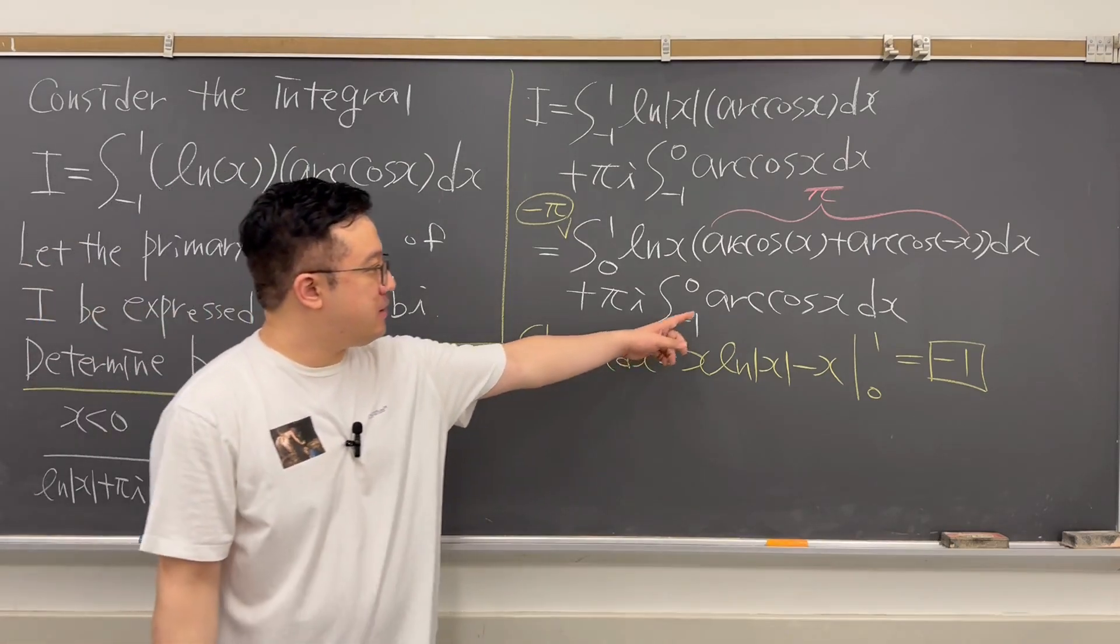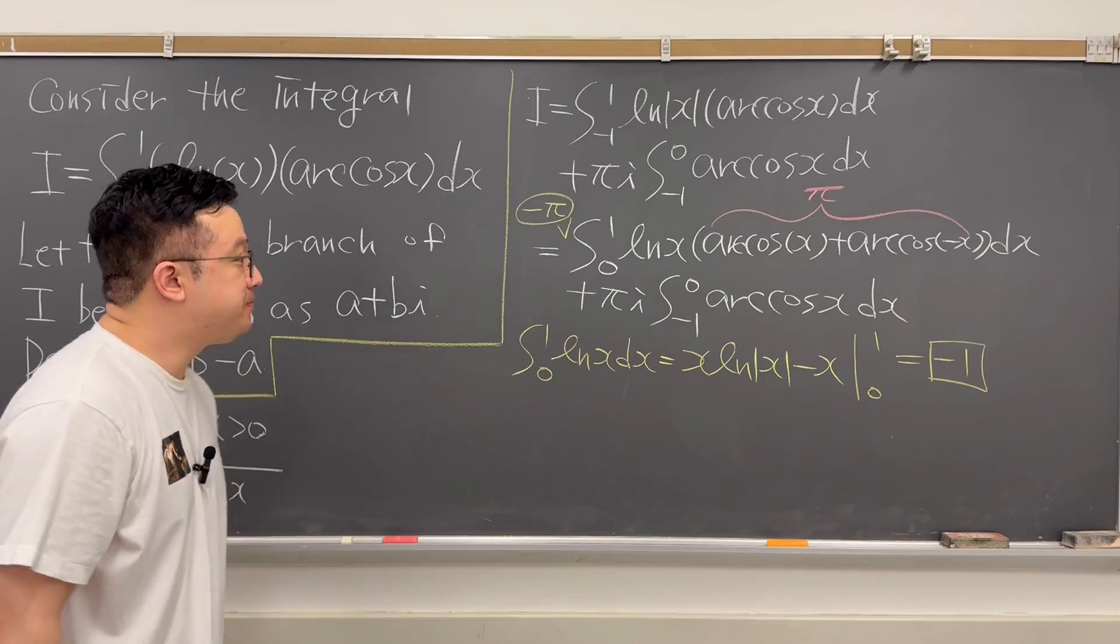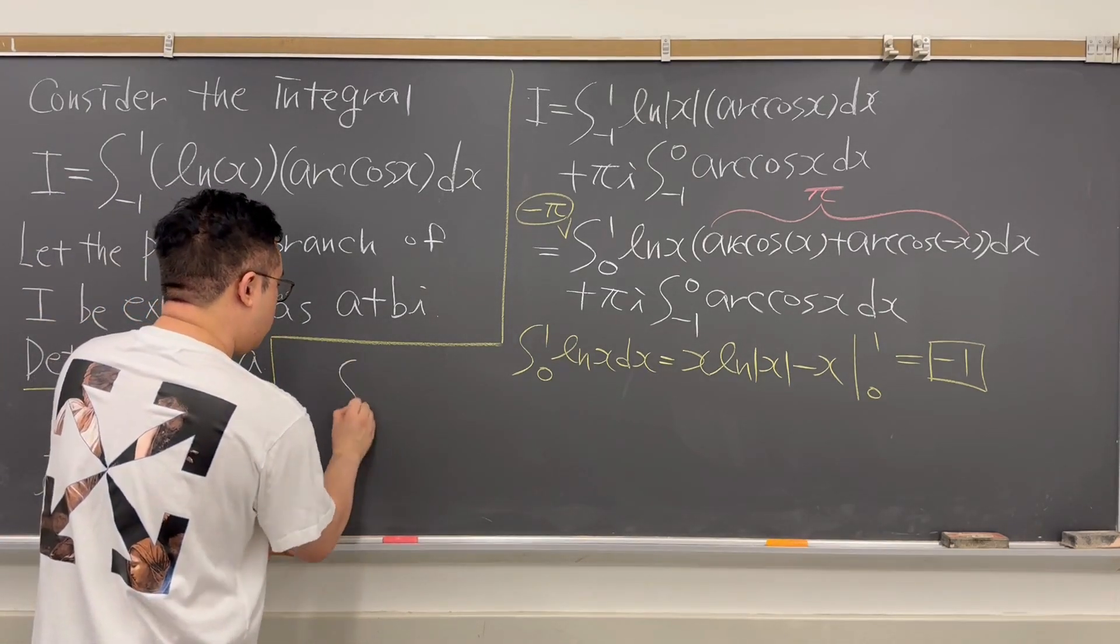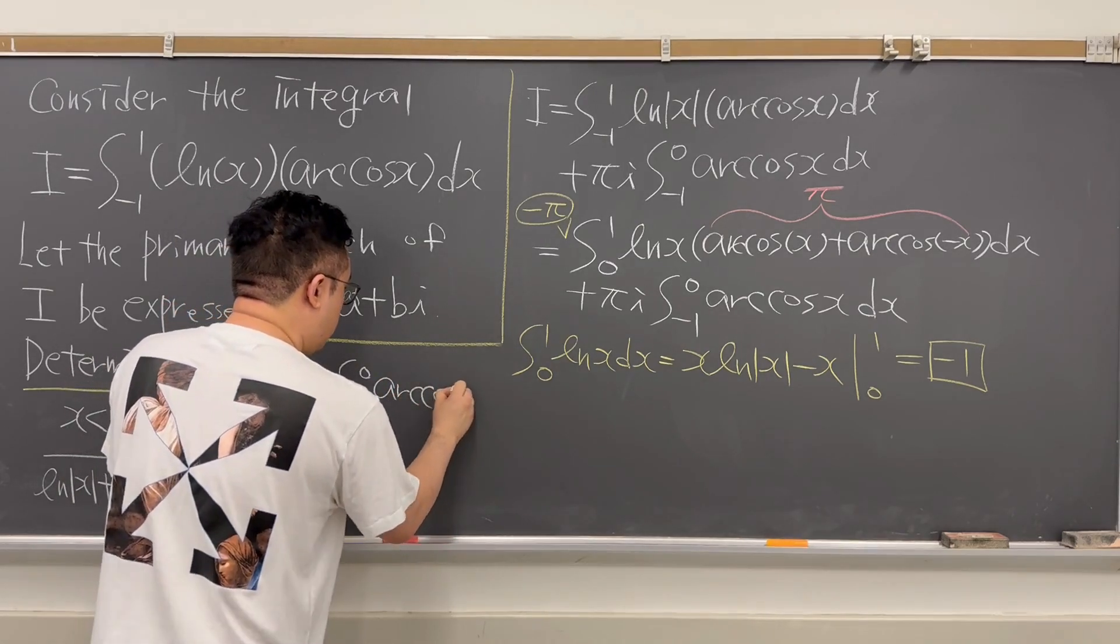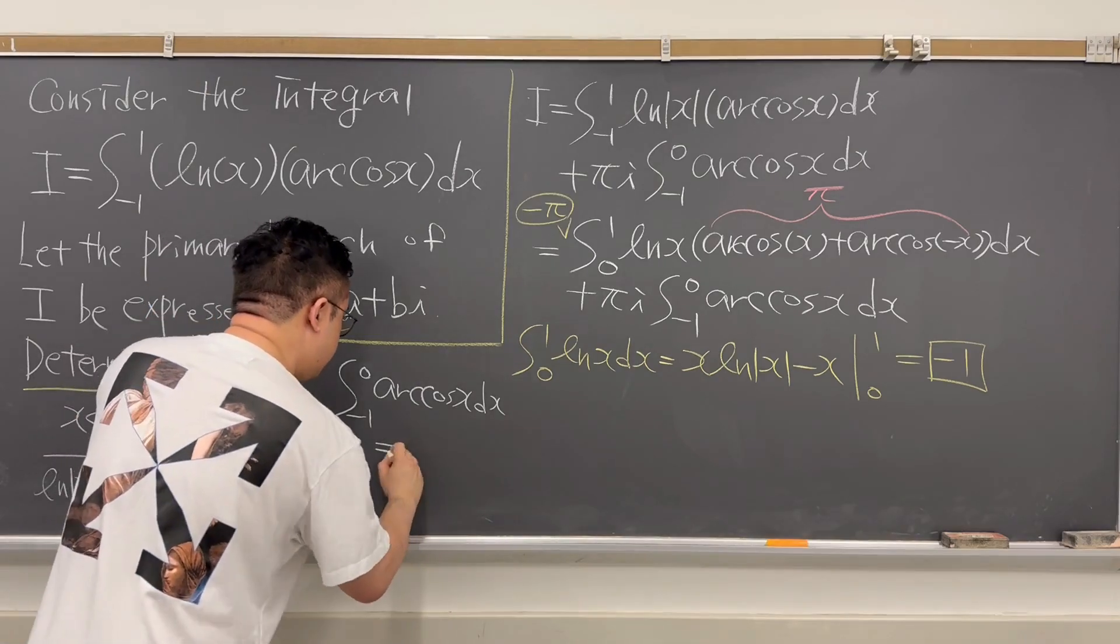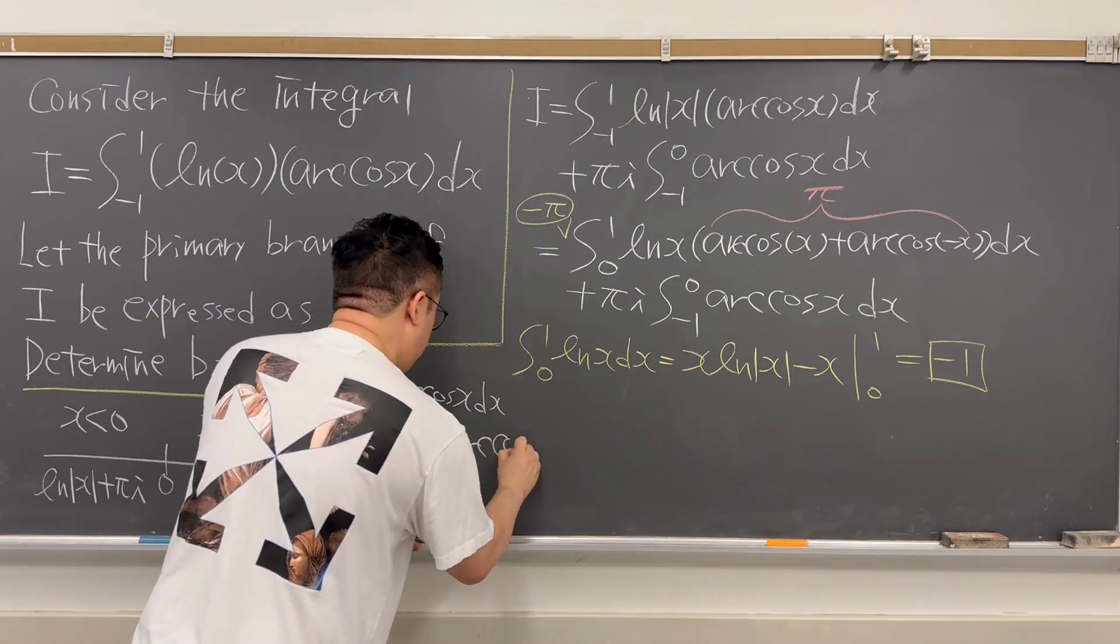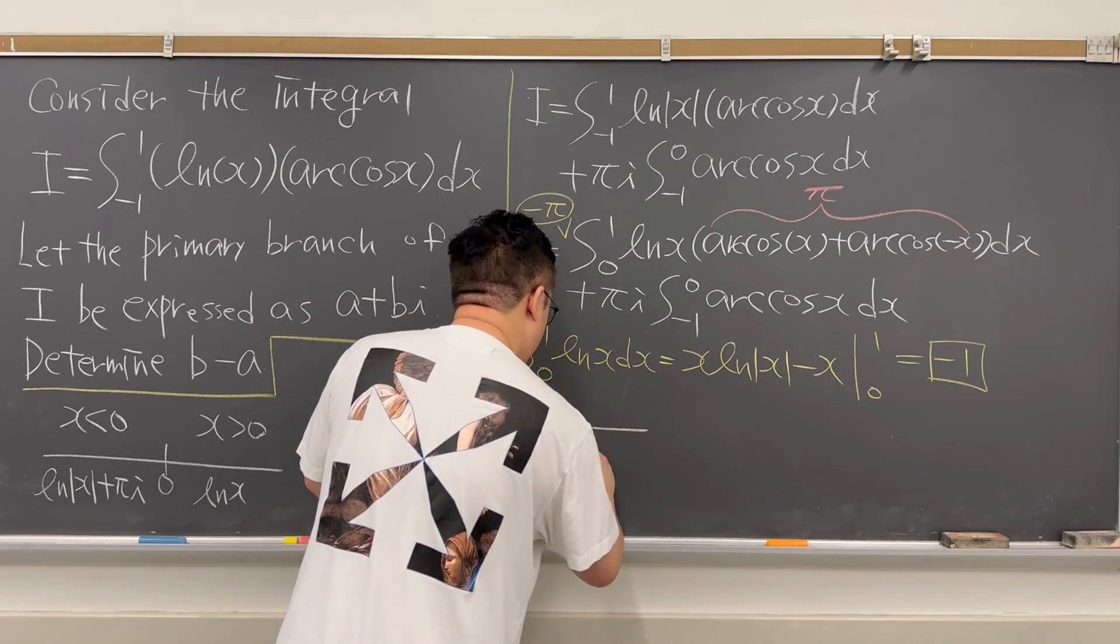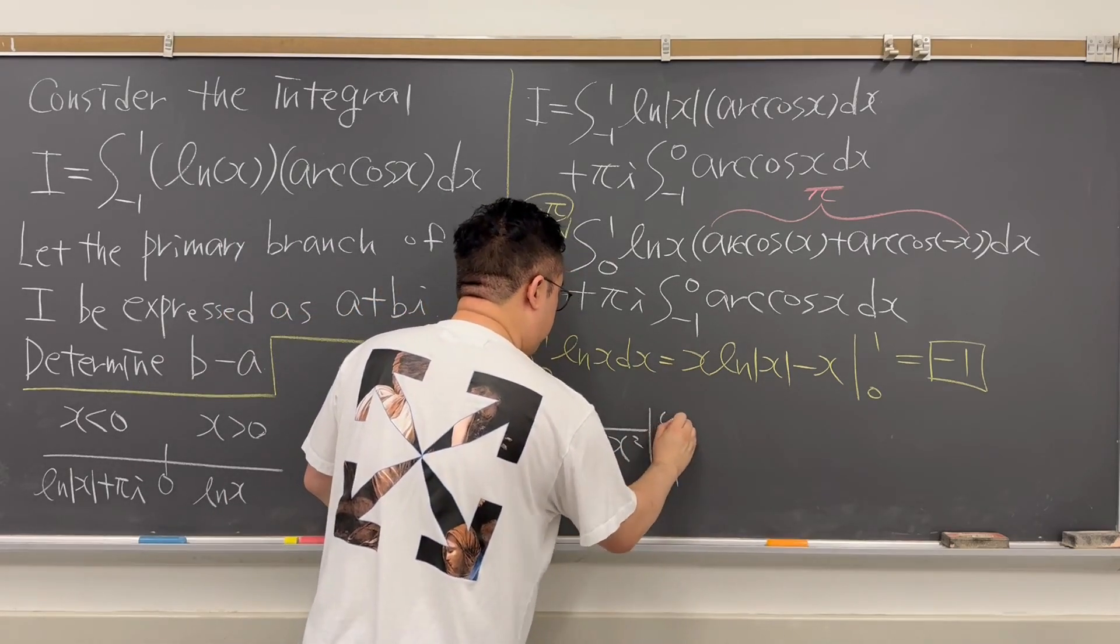Then we need to talk about the second integral, integral from negative 1 to 0, arccos(x) dx. So the second integral now is negative 1 to 0, arccos(x) dx. We can easily calculate this as x times arccos(x) minus the square root of 1 minus x squared. The lower bound is negative 1, upper bound is 0.